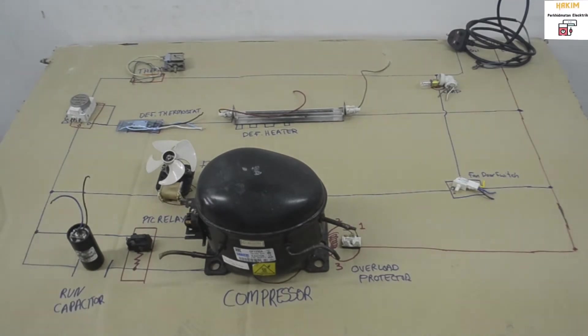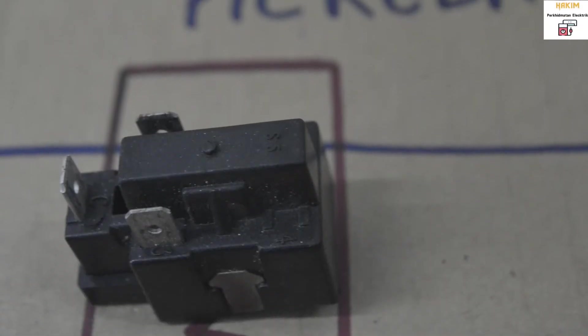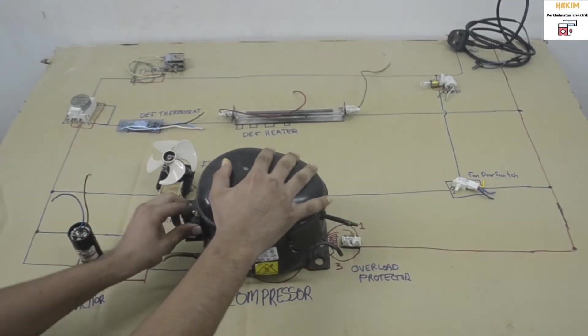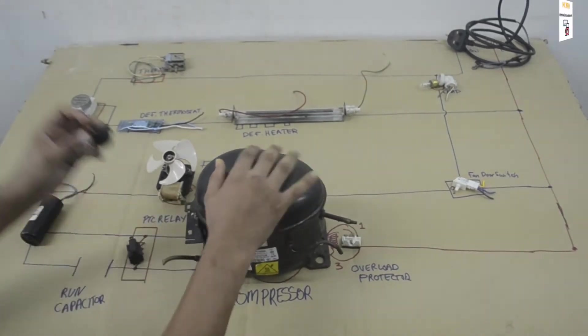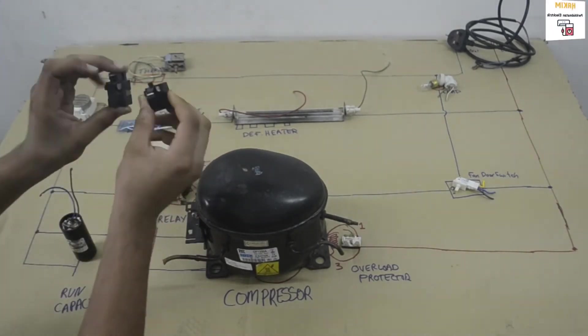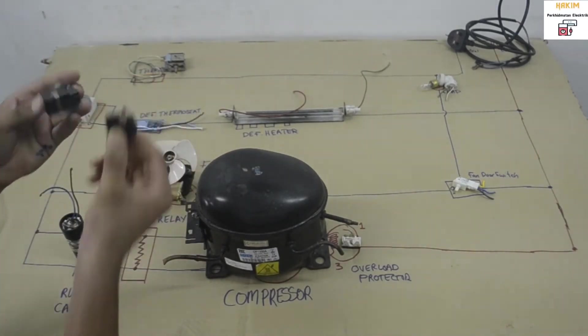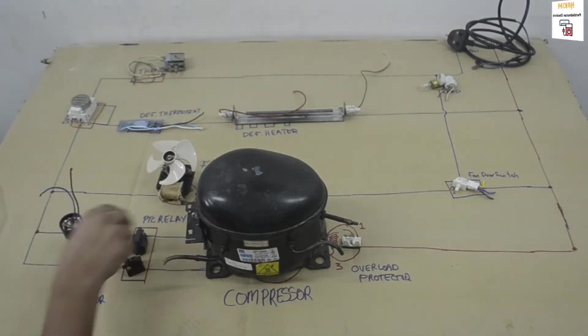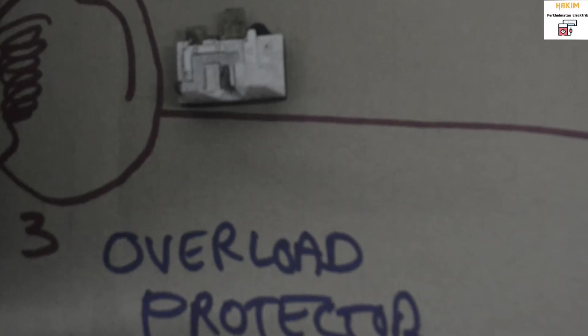After that we have the PTC relay. This is usually connected inside the compressor. This is a PTC relay and it comes in both shapes. This is usually an overload plus PTC relay. There are three pins in the compressor. You may plug a two pin one or a three pin one, but with a two pin you also have to connect an overload.